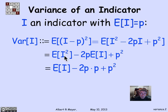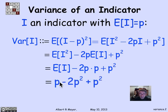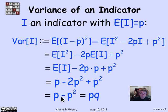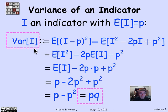That expectation of I is p, so this term becomes expectation of I, and we get p minus 2p² plus p². The p² terms cancel, giving p minus p². Factoring out p, that's p times (1 minus p), or pq — the standard way to write the variance of an indicator variable. That was easy, and again completely mechanical.